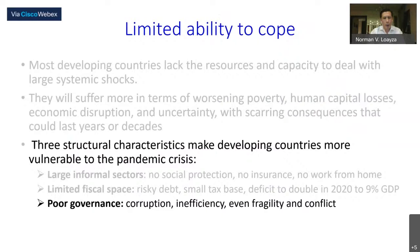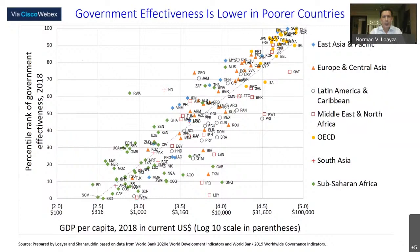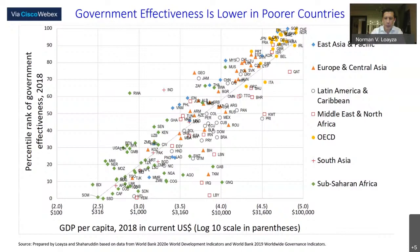The third characteristic is poor governance — meaning corruption, inefficiency, and in some cases fragility and conflict. Government effectiveness is lower in poorer countries, which limits their ability to counteract large systemic shocks.